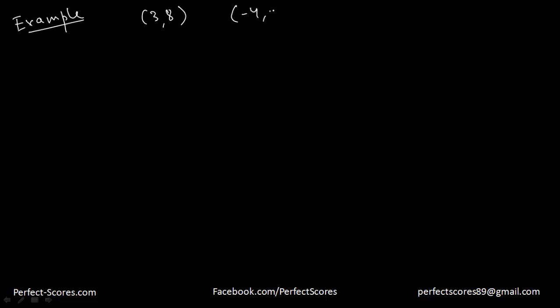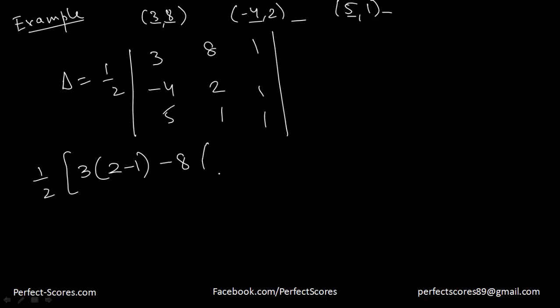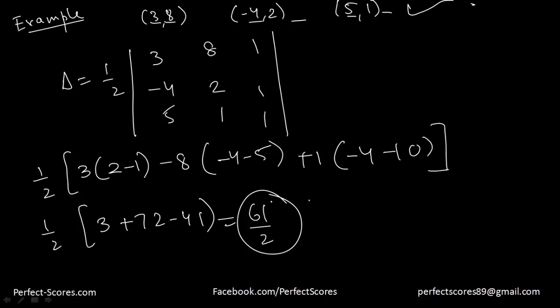Let's use this to find the area of a triangle formed by specific points. The area is half into the determinant with rows (3, -4, 5), (8, 2, 1), (1, 1, 1). Expanding that gives half into 3(2−1) − 8(−4−5) + 1(−4−10), which simplifies to half into 3 + 72 − 14, giving 61/2 as the area of this triangle.